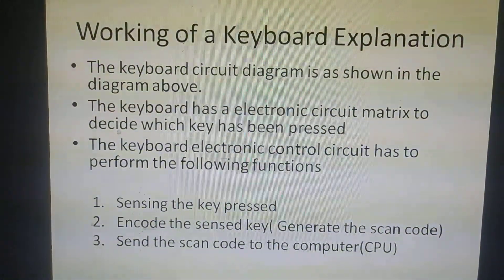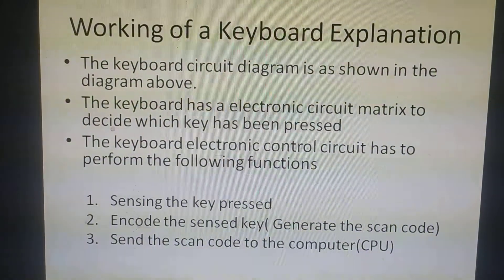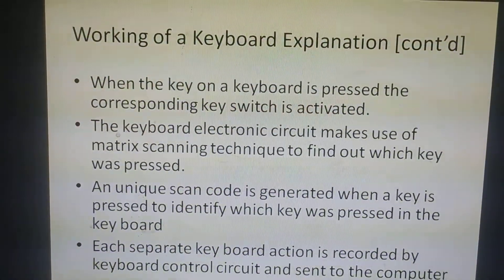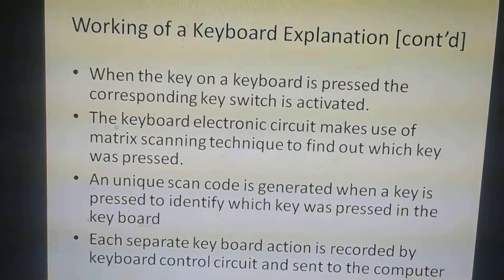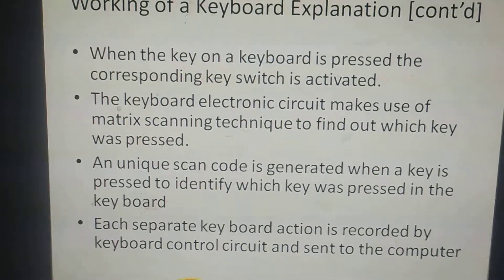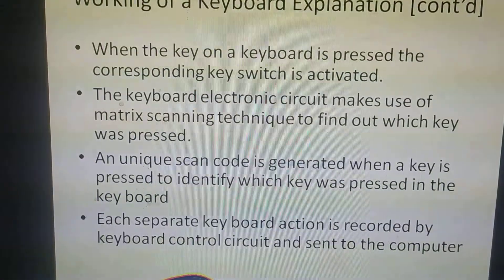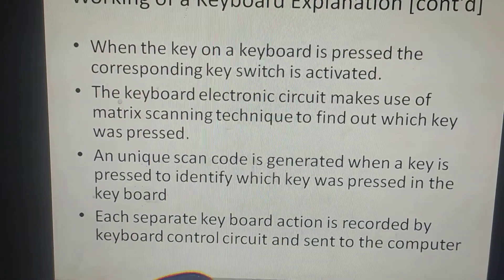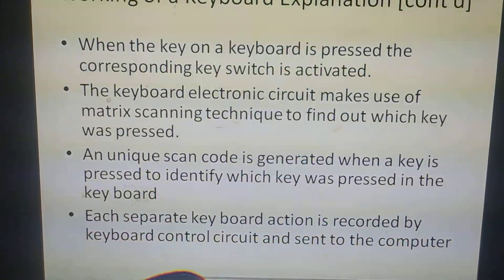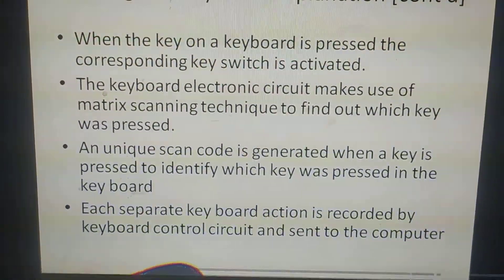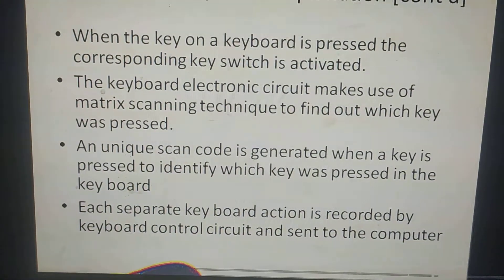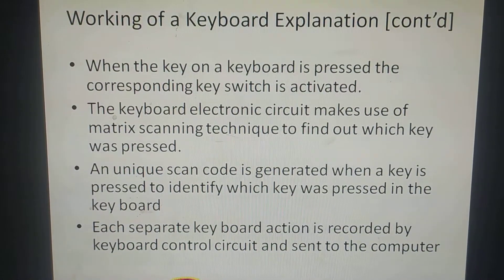Third, whatever scan code is generated should be sent to the computer — that is, to the CPU — for identifying the character which was pressed. When a key is pressed, the electronic circuit in the keyboard will scan the complete keyboard, find out which key was pressed, and that unique scan code will identify it. The data is sent to the computer by the keyboard control circuit, and the computer analyzes it to find out which key was actually pressed.